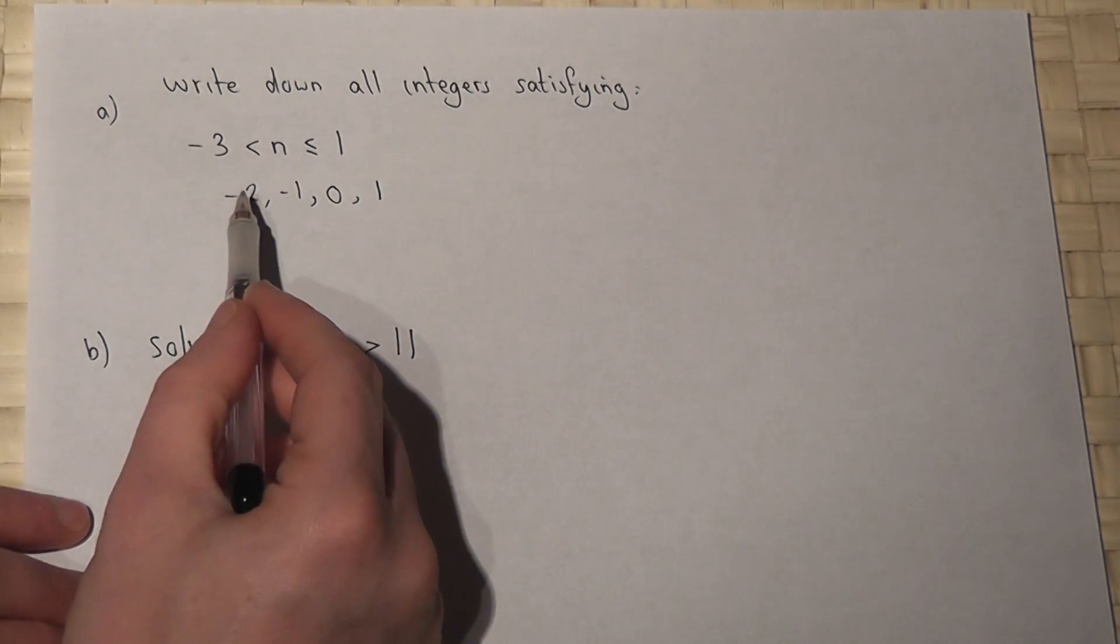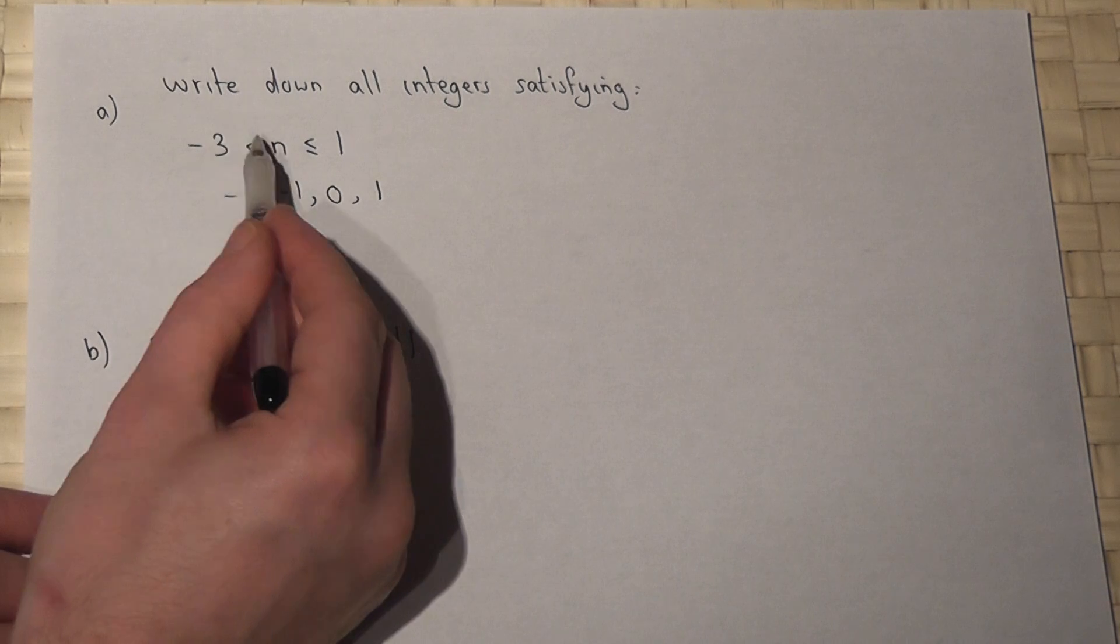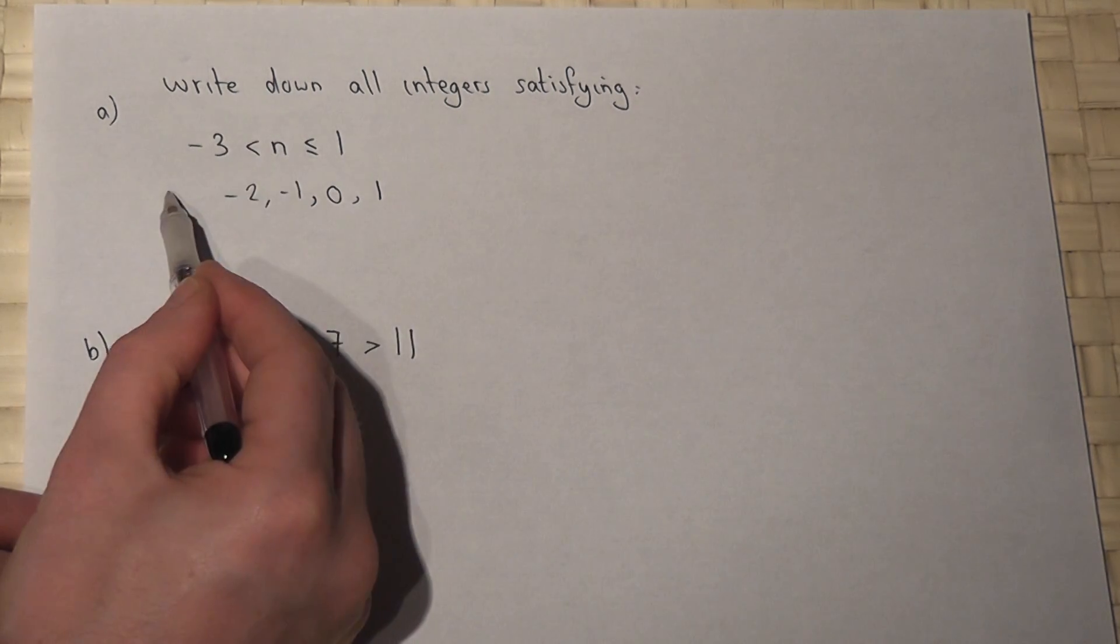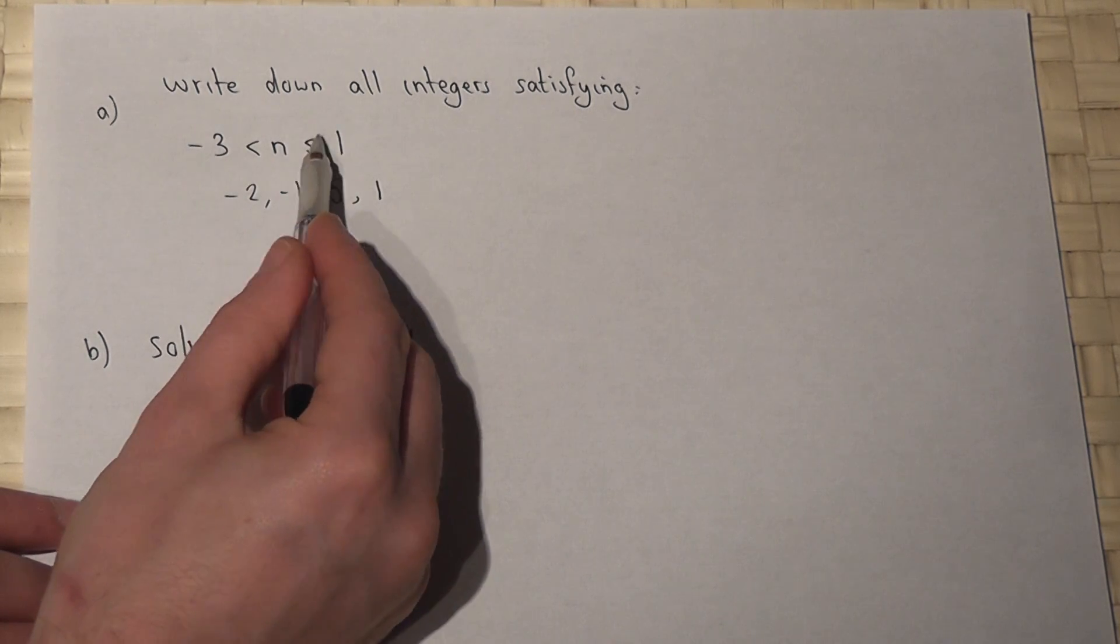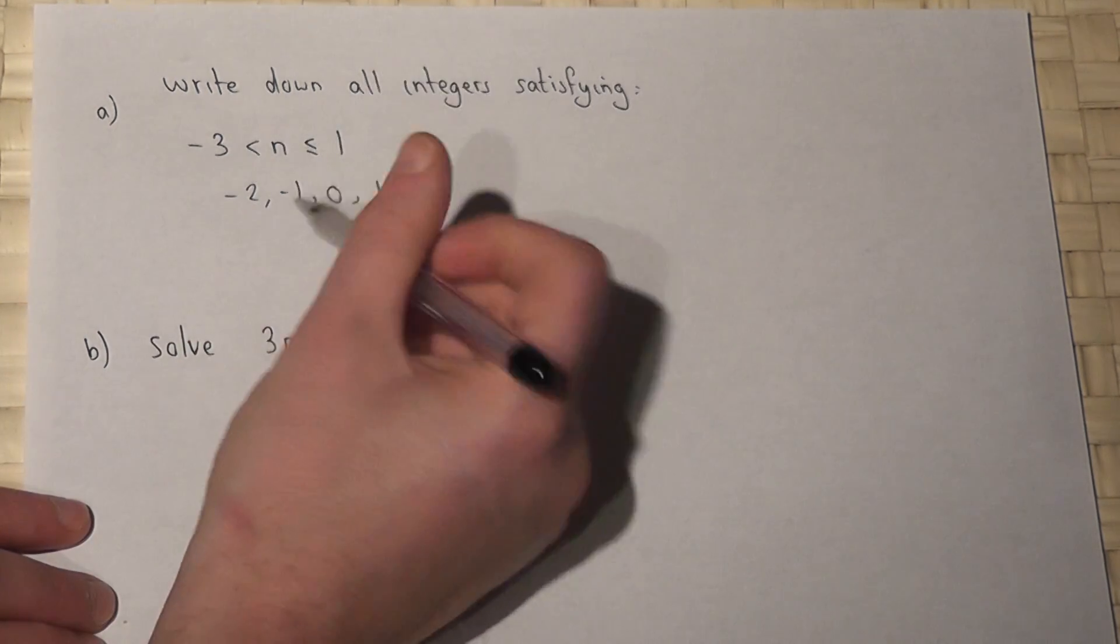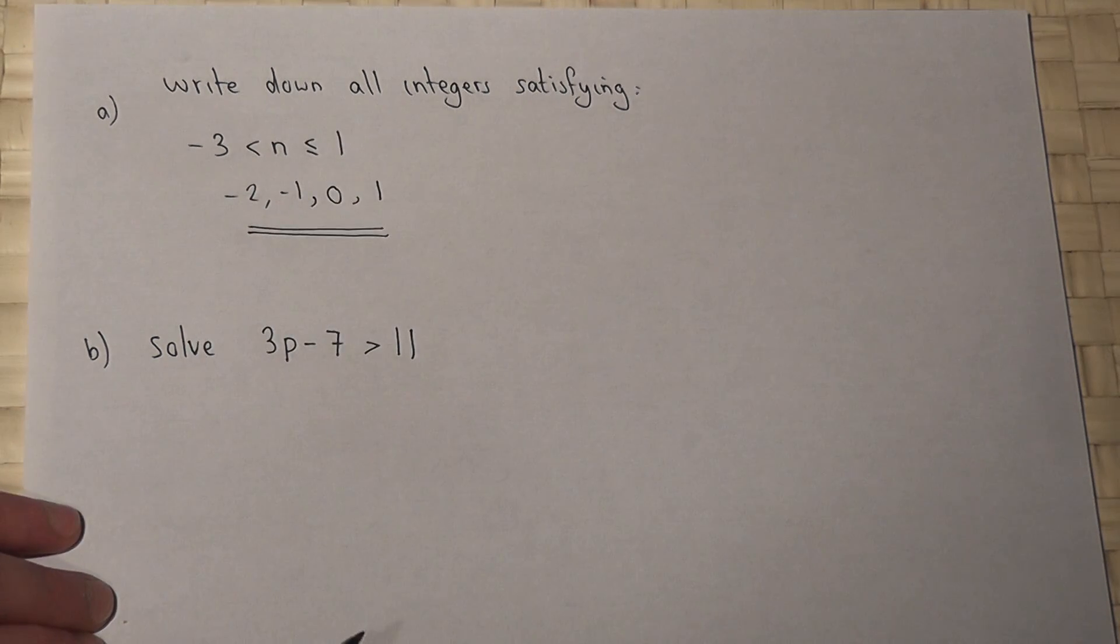So n could be minus 2, minus 1, 0, and 1. Again, this is a strict inequality, so we can't include minus 3. This allows us to include 1. So there are four values which satisfy our given inequality.